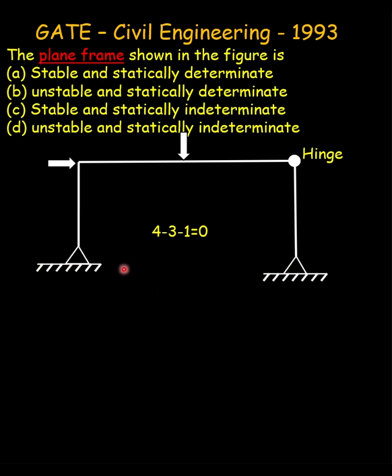As we have a pinned support, each support gives two reactions. Therefore, total unknowns is four, which is then subtracted by number of equilibrium equations and an additional equation provided by the hinge. So four minus three minus one equals zero, making the structure statically determinate and stable.